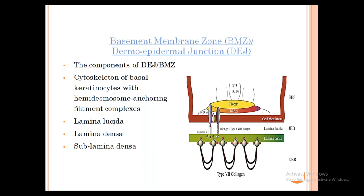This is a representative photograph of the dermo-epidermal basement membrane junction, which has three areas: the epidermal area (the basal keratinocyte), the dermo-epidermal junction called lamina lucida and lamina densa, and the sub-lamina densa area of the dermal region. The epidermis is made up of keratinocytes, which are held together by desmosomes.